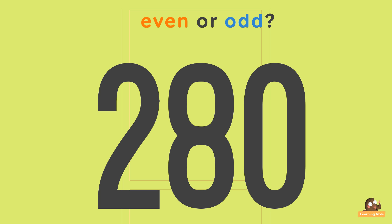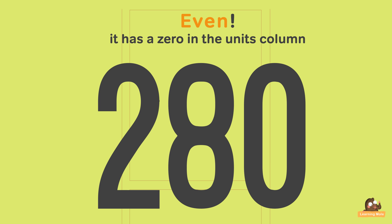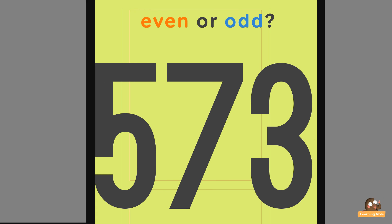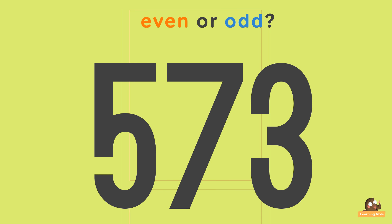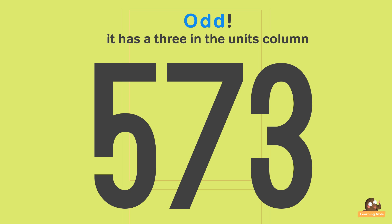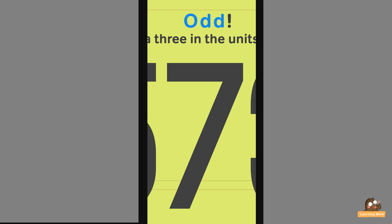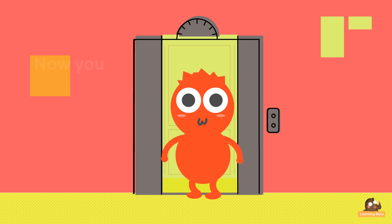280 — even or odd? Even! It has a zero in its units column. 573 — even or odd? Odd! It has a 3 in its units column.